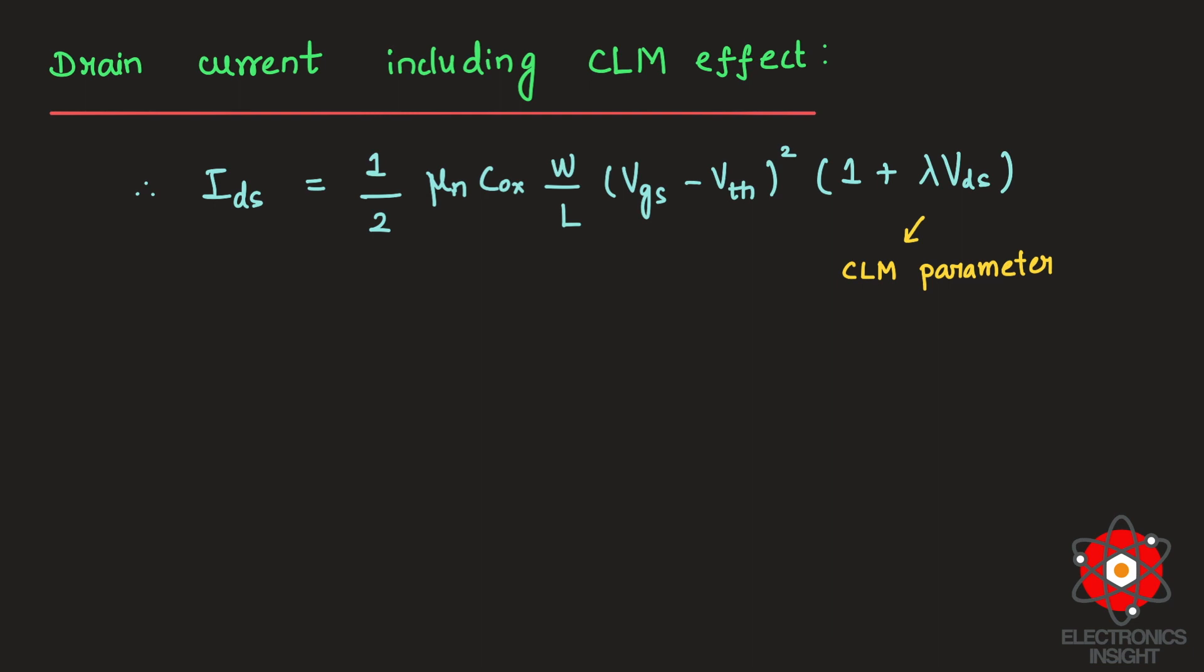Once this equation is fixed, from the given data we know that IDS1 was equal to 1 milliamp for VDS1 equal to 5 volts, and IDS2 was 1.02 milliamps for VDS2 equal to 6 volts for the same VGS.